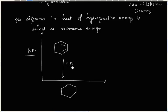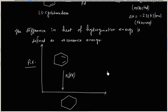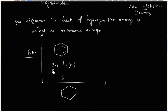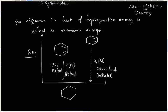This is hydrogenation of 1,3-cyclohexadiene. Absorbed energy is 232 kJ per mole. Expected energy is 240 kJ per mole. Difference in energy is resonance energy. That is 8 kJ per mole.